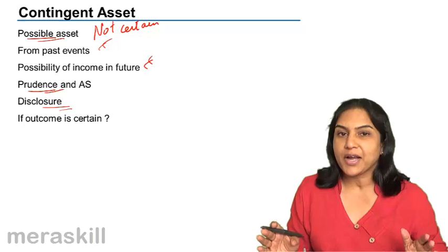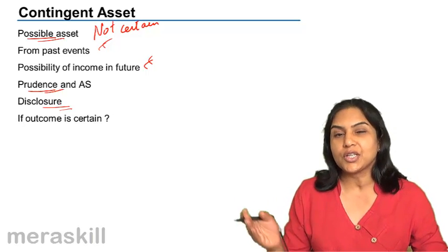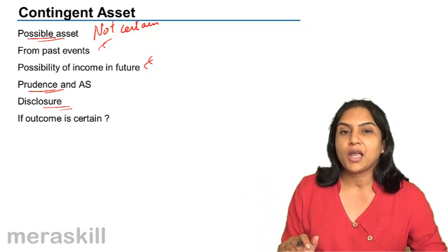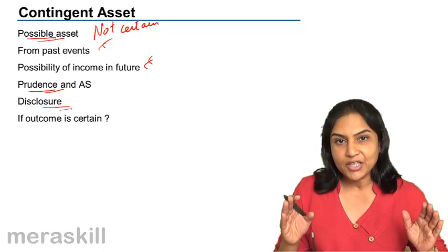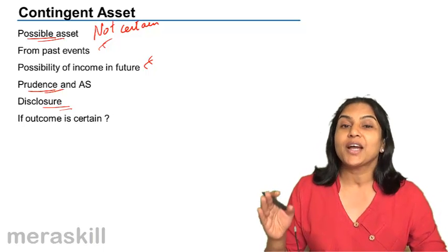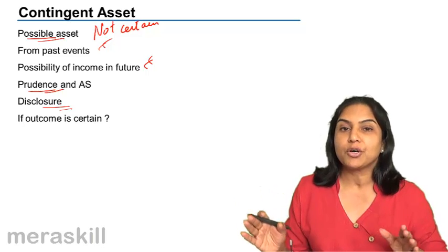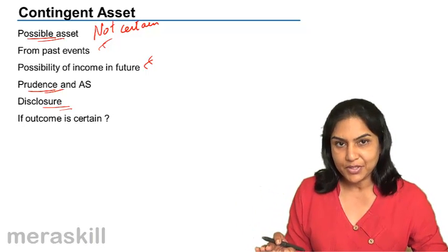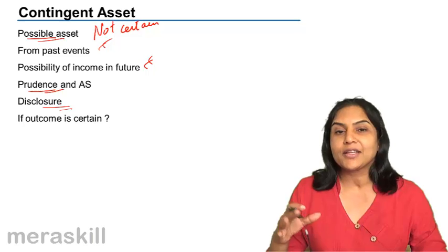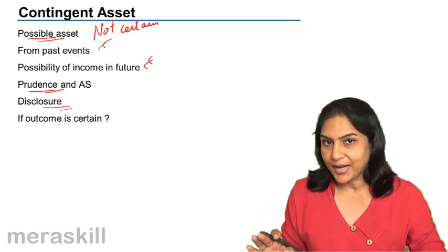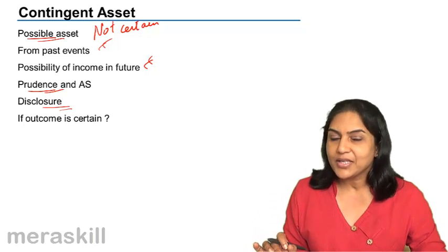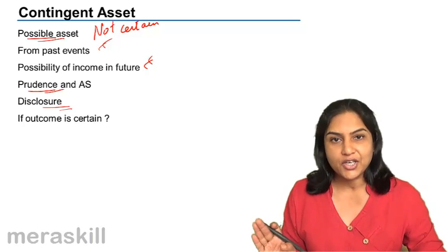It is however, in case of a company, disclosed in the report of the board of directors. It can be disclosed in the report of the approving authority, the authority which approves the financial statements. So a note may be made in the report of the board of directors. But otherwise, it is not disclosed in the financial statements.